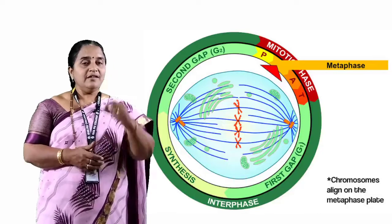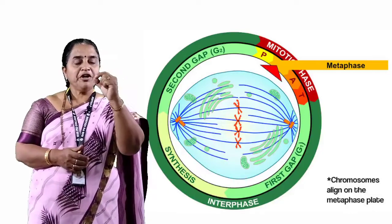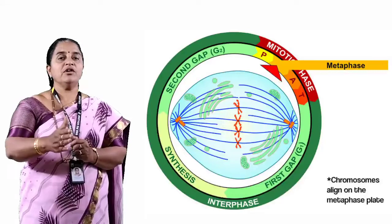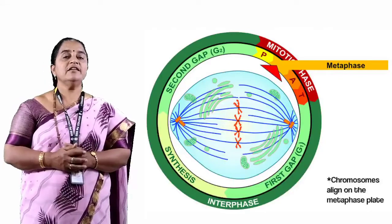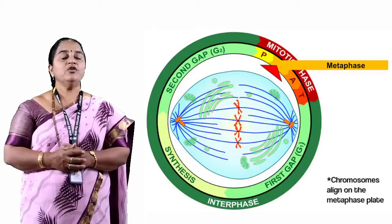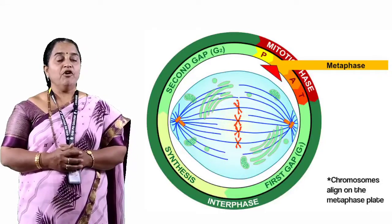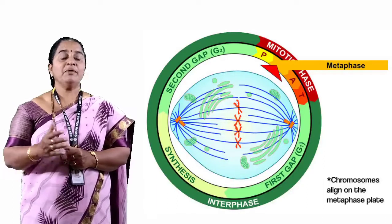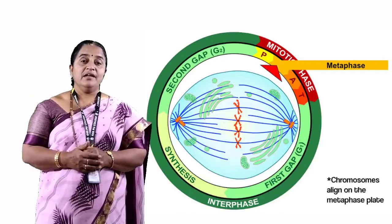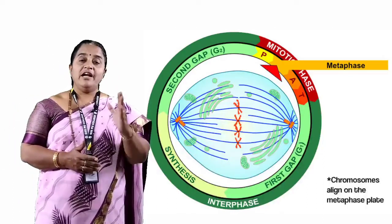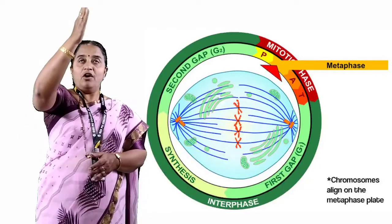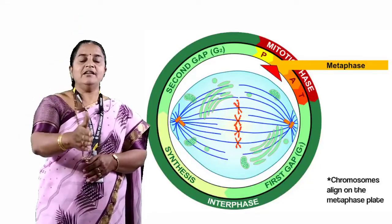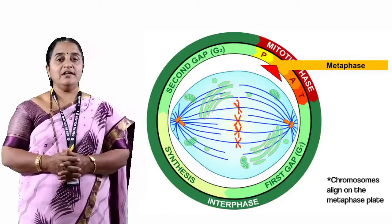There is a point where all the chromosomes are brought to the center, or equatorial line, of the cell, forming the equatorial plate or metaphasic plate. At the end of metaphase, we can see all chromosomes aligned along the equatorial line of the cell.